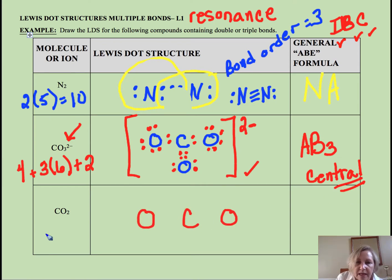CO2. Carbon has four. Two oxygens each brings six. So I have twelve plus four is sixteen. Two, four, six, eight, ten, twelve, sixteen.